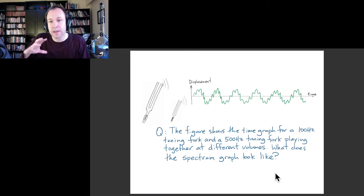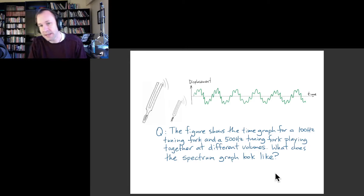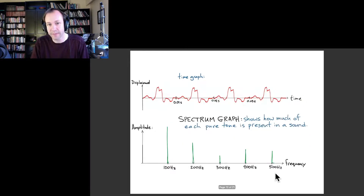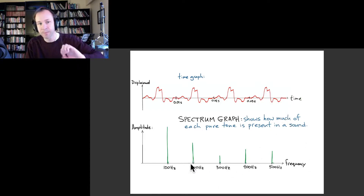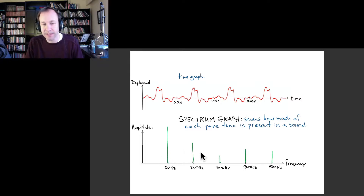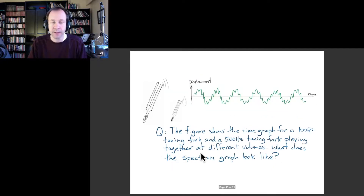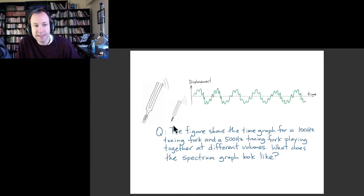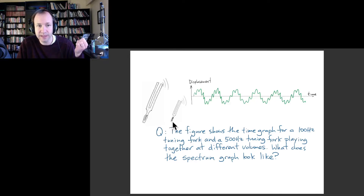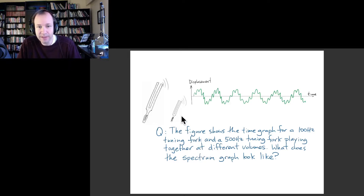I want to give you something to think about to make sure you understand the concept of the spectrum graph — the second way we have of representing information about a sound or musical tone. Here's an example: you have two tuning forks — one at 100 hertz and the other at 500 hertz — playing together at different volumes.